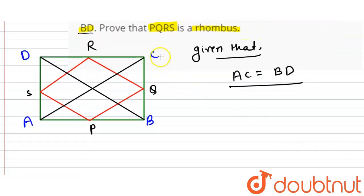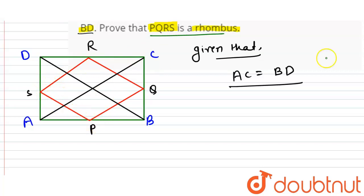Now, to prove PQRS is a rhombus, what we have to show is: if we are able to show that PQ equals QR equals RS equals PS, then PQRS is a rhombus. So what is the proof?